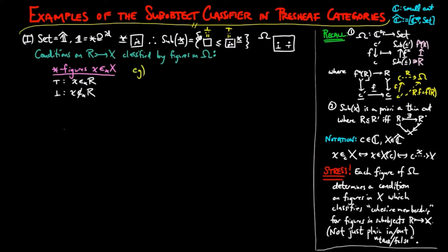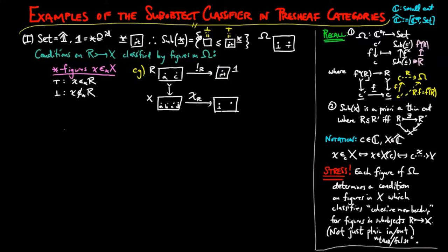For figure little x in X, either x is in R or it is not. For example, if X is a set containing elements a, b, c, and d, and R is a subset containing a and c, then the characteristic map χ_R takes a and c to true and b and d to false.